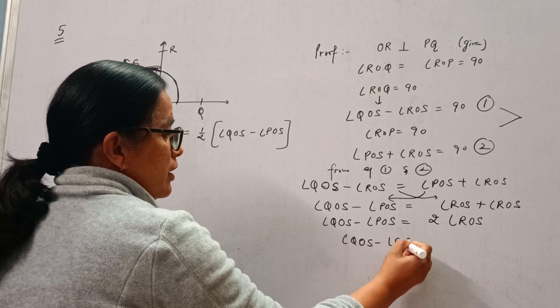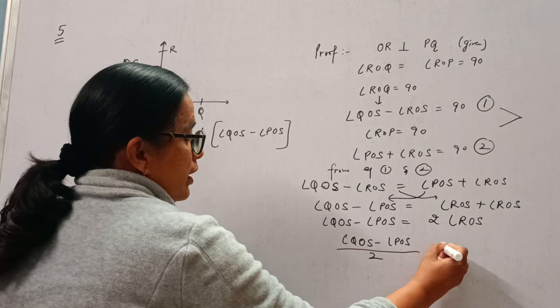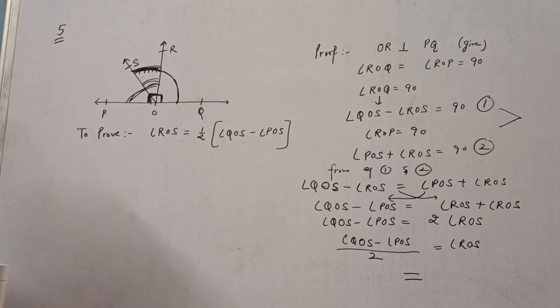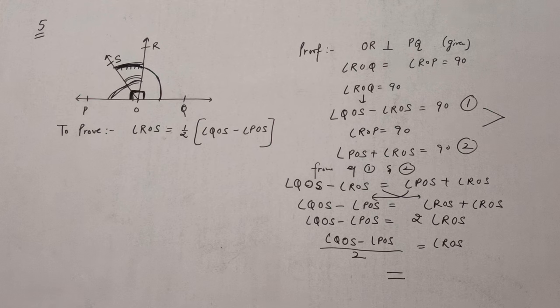QOS minus POS divided by 2 is equal to ROS. Hence proved. Okay, so this is question number 5 of exercise 6.1. I hope you all have understood. Thank you for watching. Have a nice day.